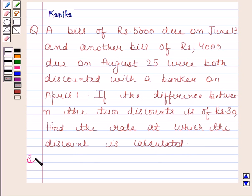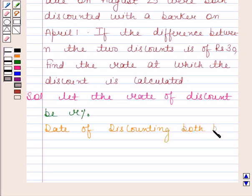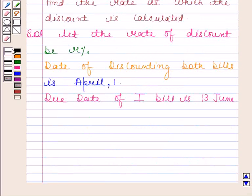Now begin with the solution. Let the rate of discount be R percent. The date of discounting both bills is April 1. Due date of first bill is 13 June, and due date of second bill is 25 August.